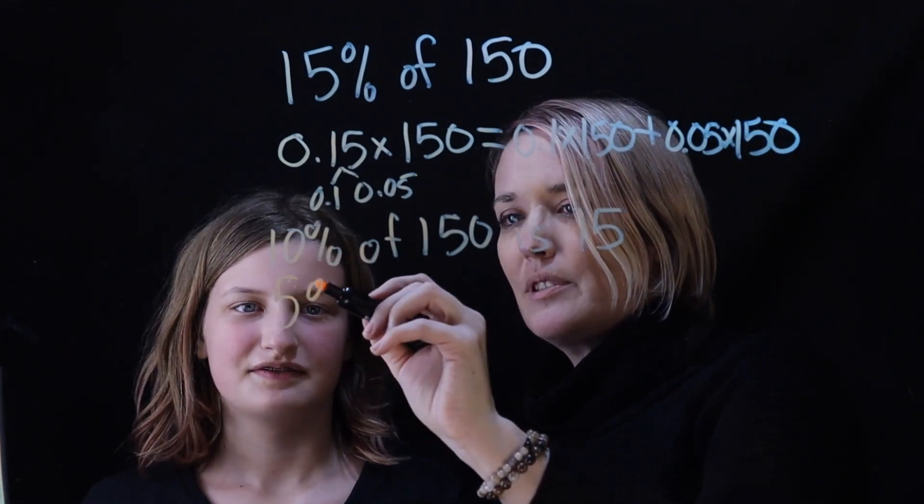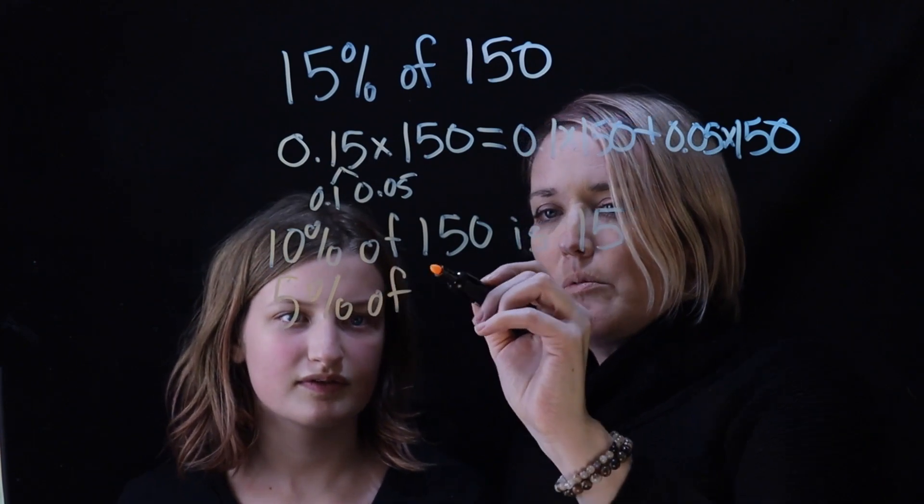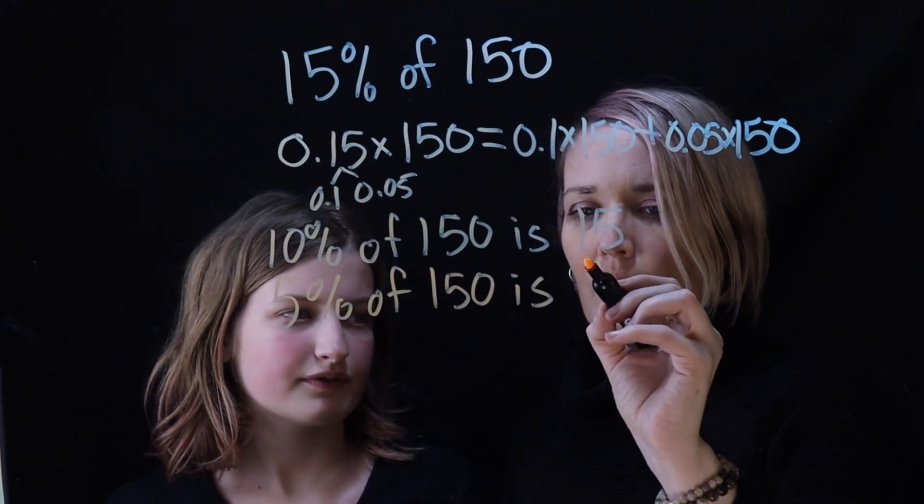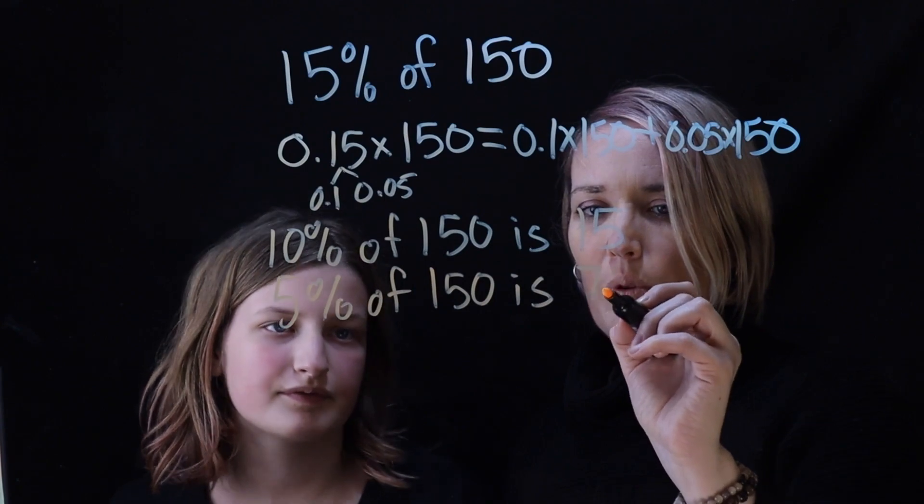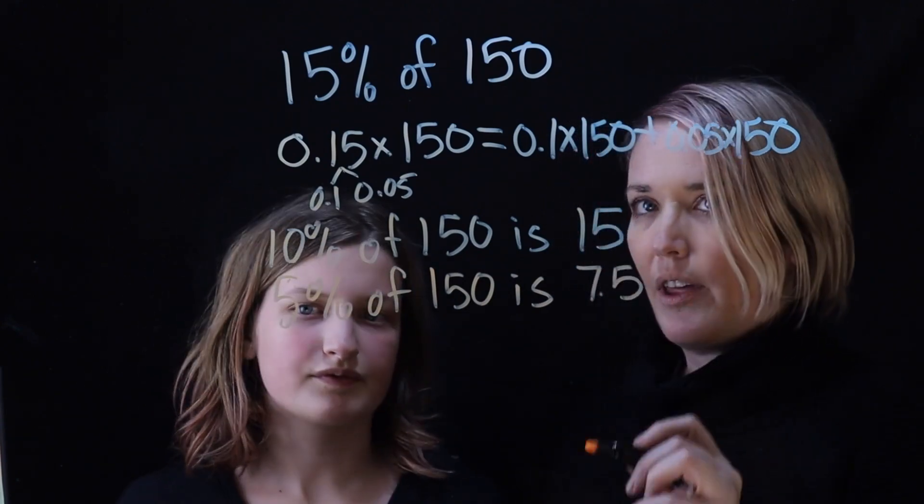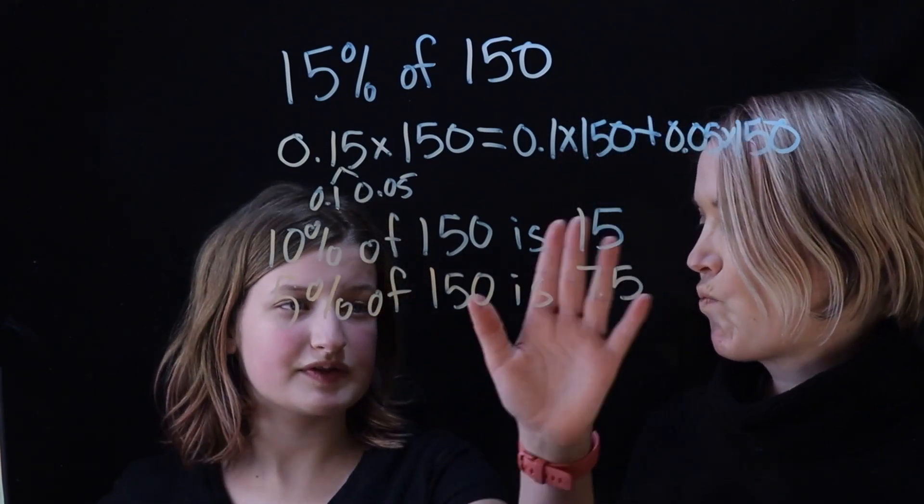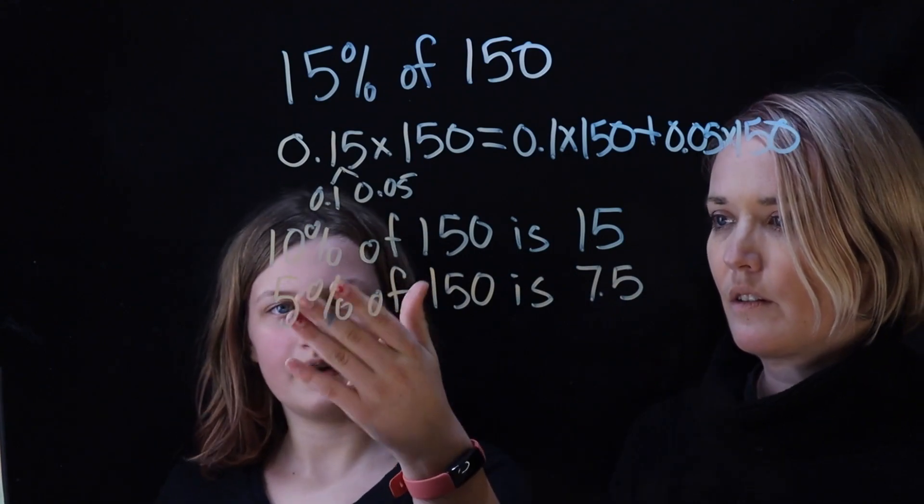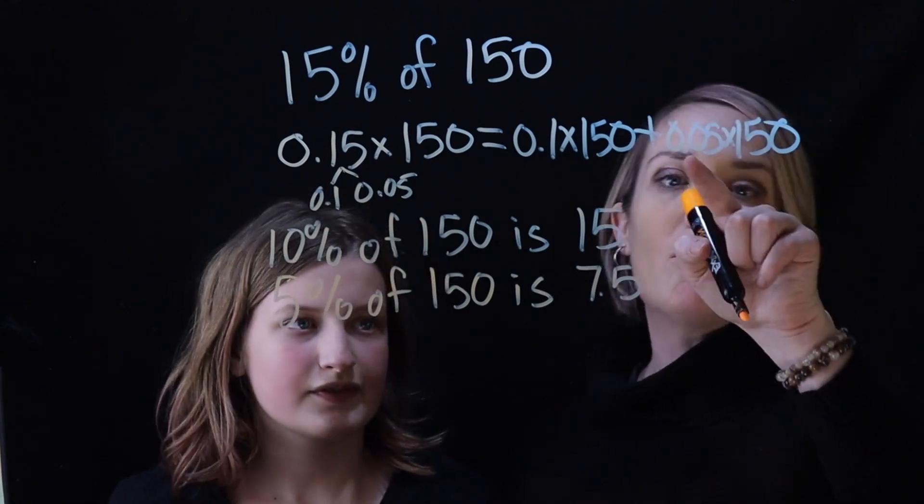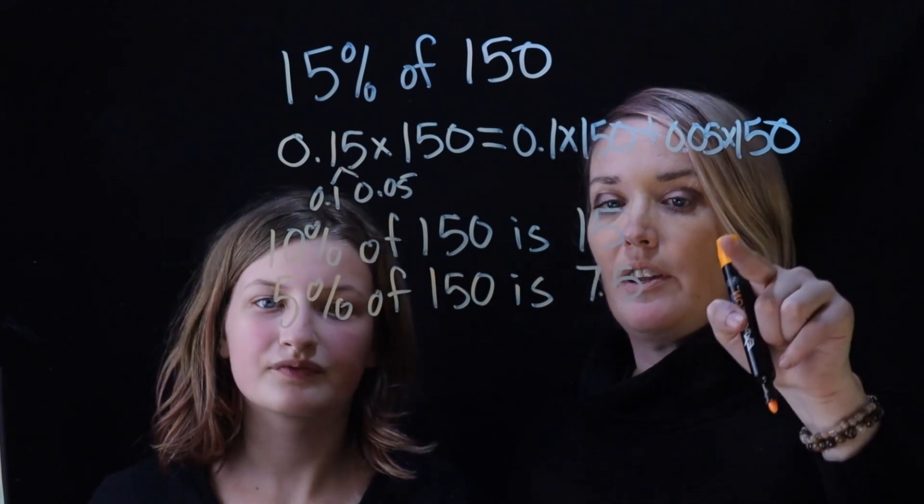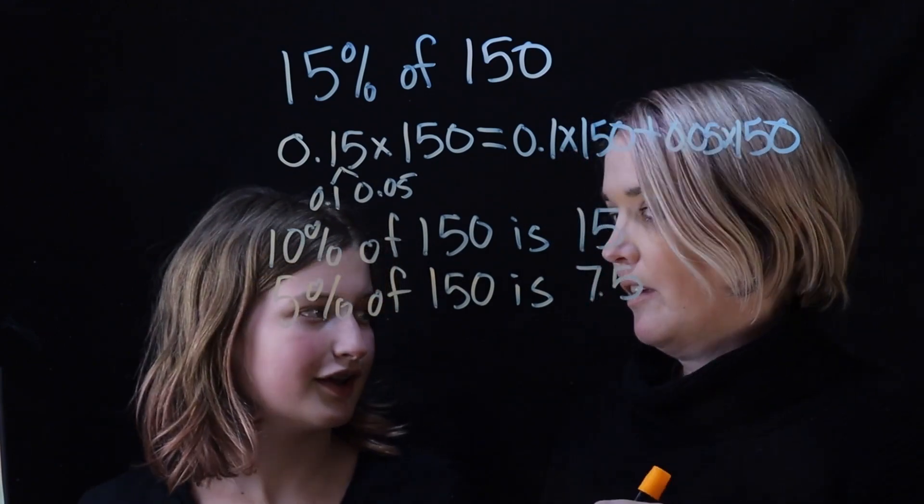Okay, and then 5 percent of 150 is 7.5. 7.5. Now how did you know that one? Because half of 15 is 7.5, and half of 5 and 10 is 5. Oh okay. Or 0.05 times 150 is 7.5.